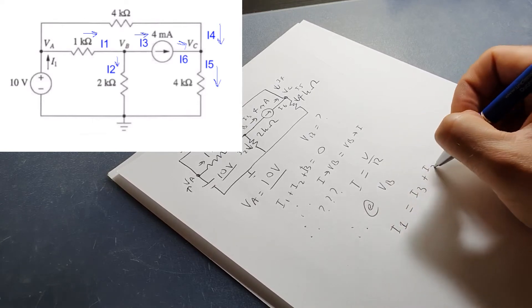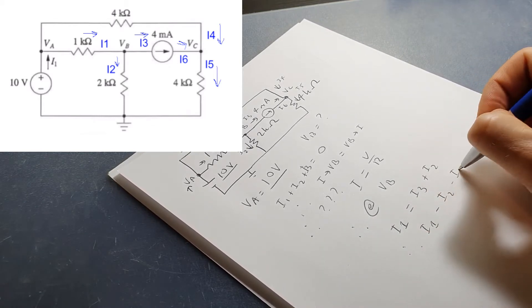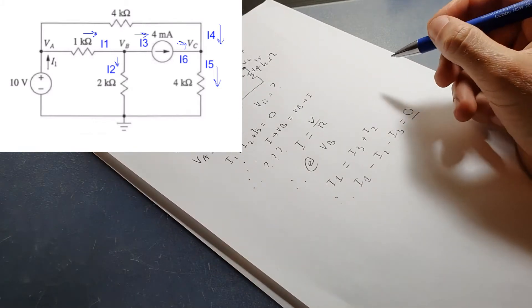Therefore we're going to create an equation: I1 equals I3 plus I2, or I1 minus I2 minus I3 equals zero. Look here, I've labelled them in the diagram.